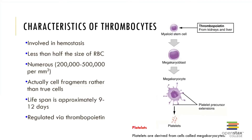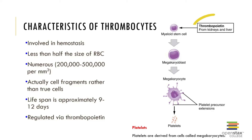Now let's talk about thrombocytes, which are our platelets. Platelets are less than half the size of red blood cells and are the second most numerous of the three formed elements. They're not true cells but rather cytoplasmic fragments of larger cells called megakaryocytes. Their production is regulated by thrombopoietin, and their lifespan is only about 9 to 12 days.